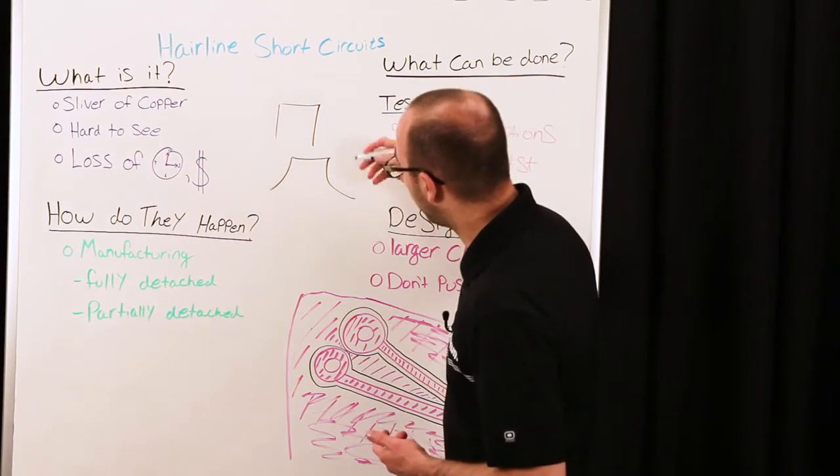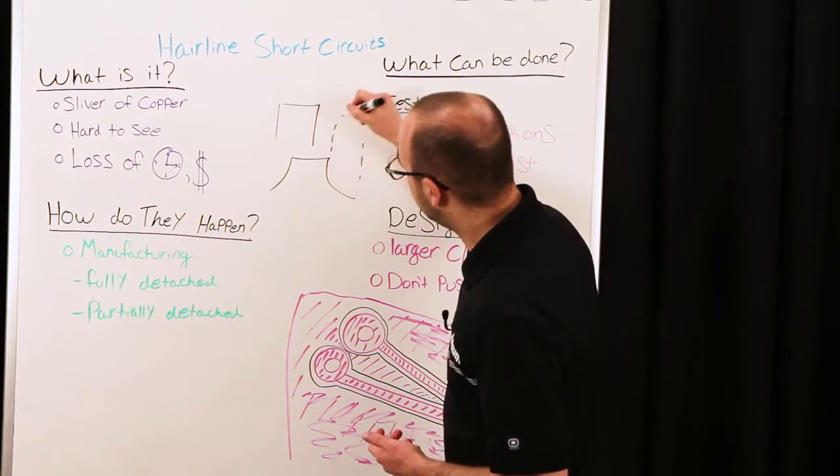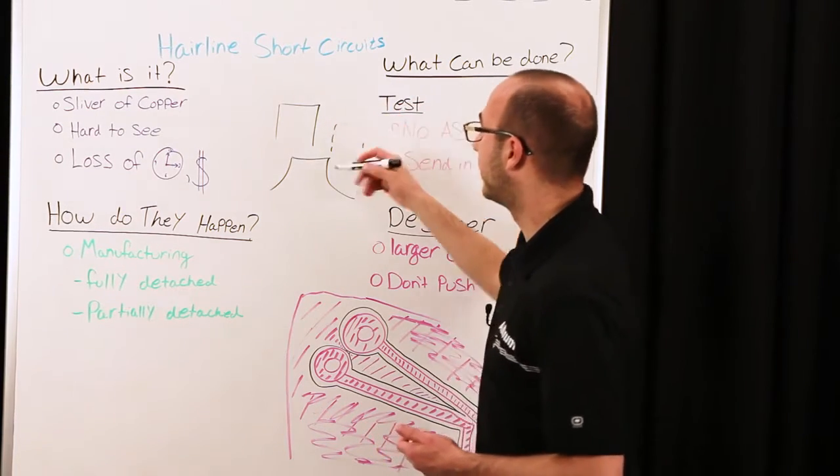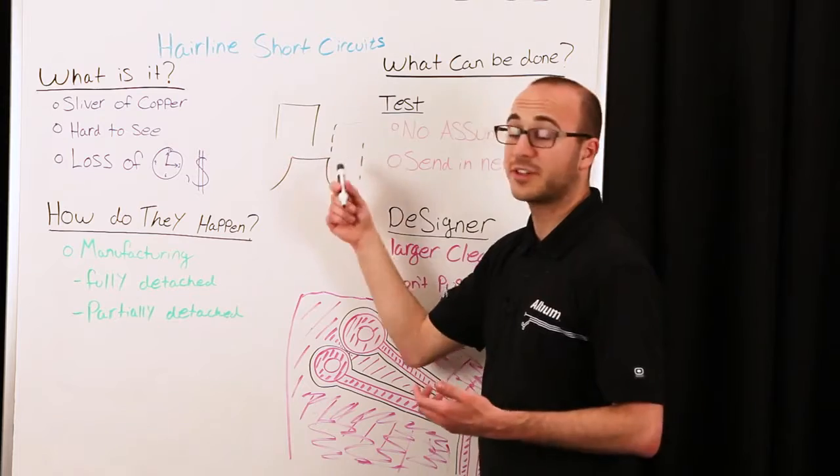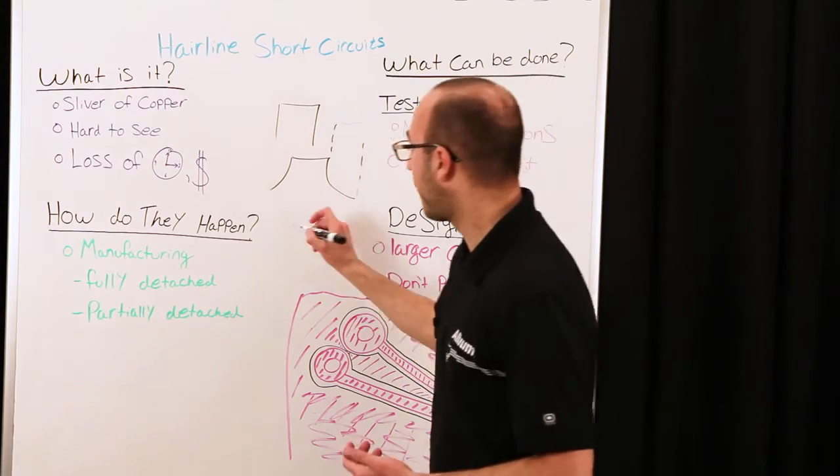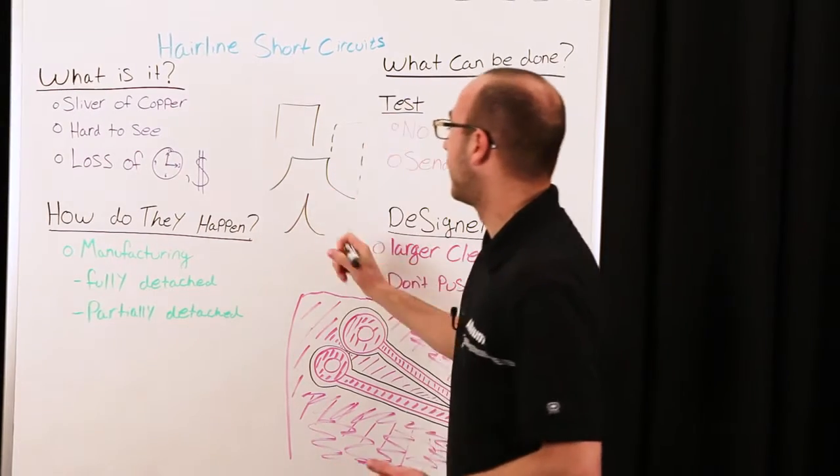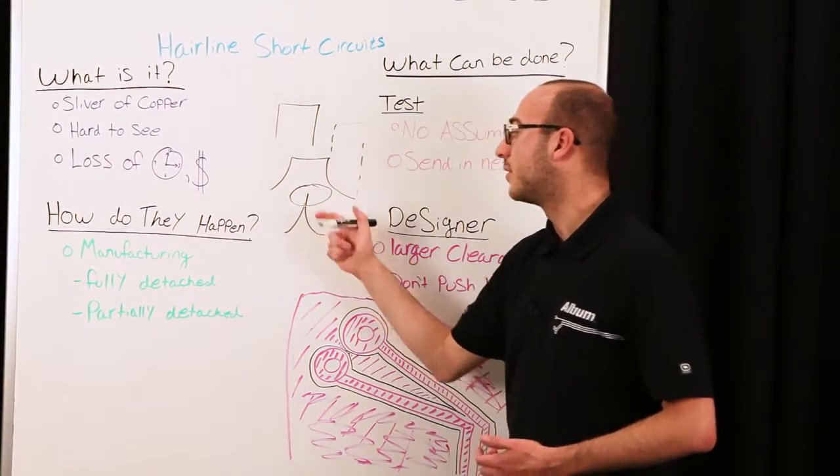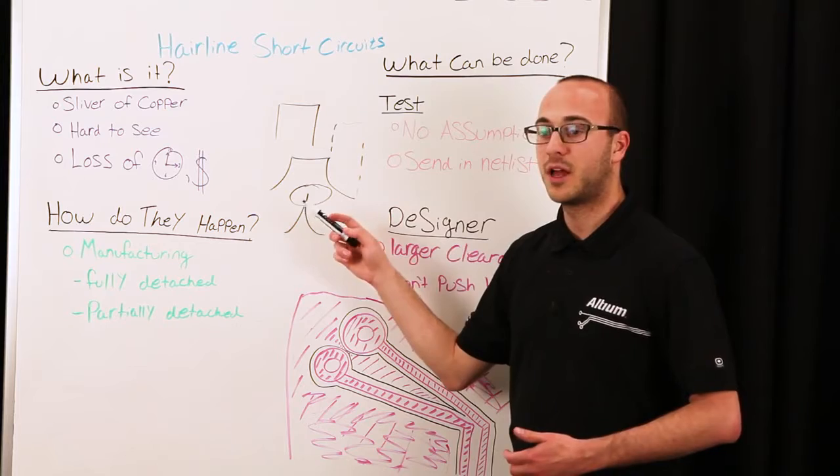So, there is some etching here that occurs. So, it's not a perfect square. But, if your trace is very narrow, there's no support up here. And, this is where it can detach,